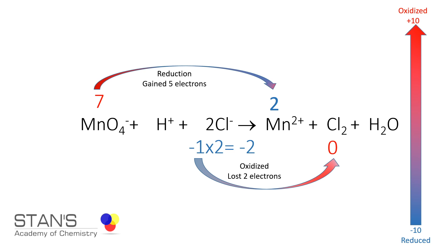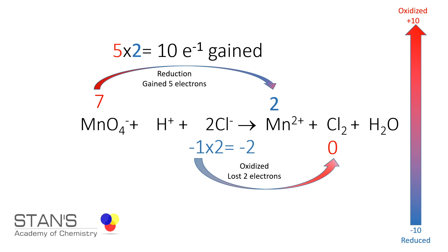Whenever oxidation takes place there is loss of electrons, and whenever reduction takes place there is gain of electrons. The number of electrons lost is not equal to the number gained, so balancing is about making these equal. This happens if you take two moles of permanganate — multiply five by two, giving a coefficient of two for permanganate — and multiply the two chloride ions by five, giving 10 moles of electrons.